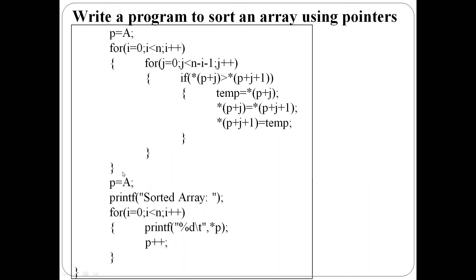Finally, when the outer for loop ends, all elements are sorted. Then the sorted array is displayed. The array pointer is reset to the beginning: p equal to a. Then the sorted array is displayed using a for loop. p points to a[0] — its content is displayed. Pointer is incremented to point to a[1], and a[1]'s content is printed. This process continues n times.